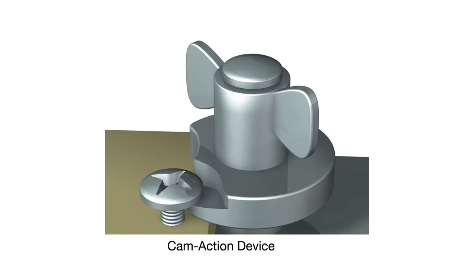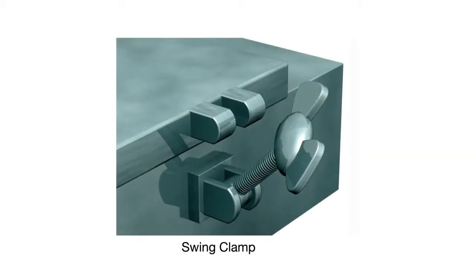Other examples of quick connectors are cam action devices and swing clamps. Cam action devices allow for a quick turn to fix an item to an object, while swing clamps act as both a tool and a tightening device. For instance, swing clamps can be adapted with a tightening nut, so they can be swung into place and tightened with a single movement.